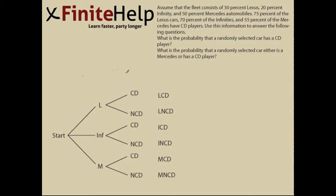This is another problem from section 3.3 that was submitted by a student. To start out, we draw our tree diagram, which I've already done. We have three different kinds of vehicles in a fleet: Lexus, Infinity, and Mercedes. Of those vehicles, they either have a CD player or do not have a CD player. So I have CD for CD player and NCD for no CD player.